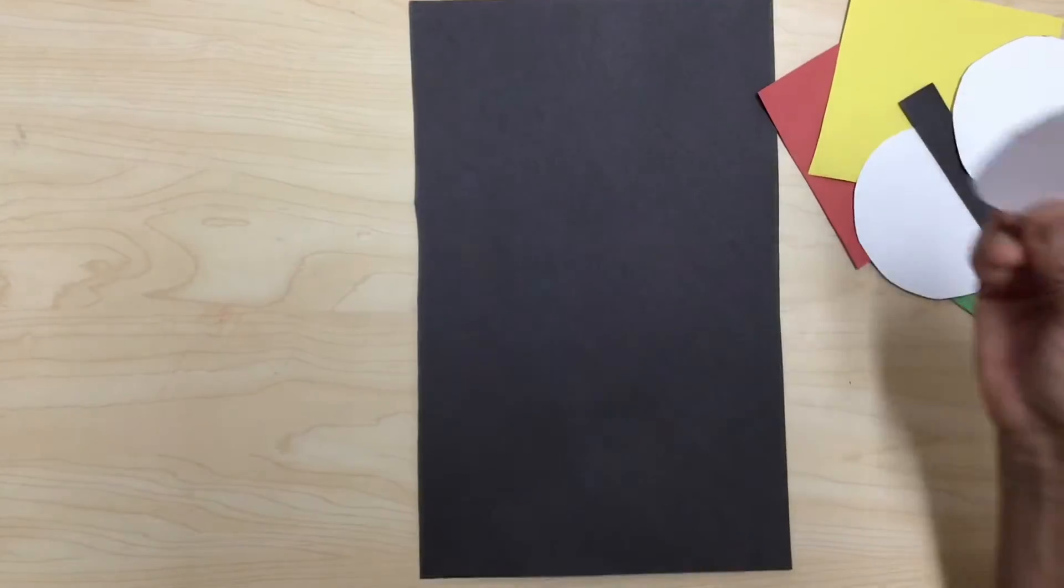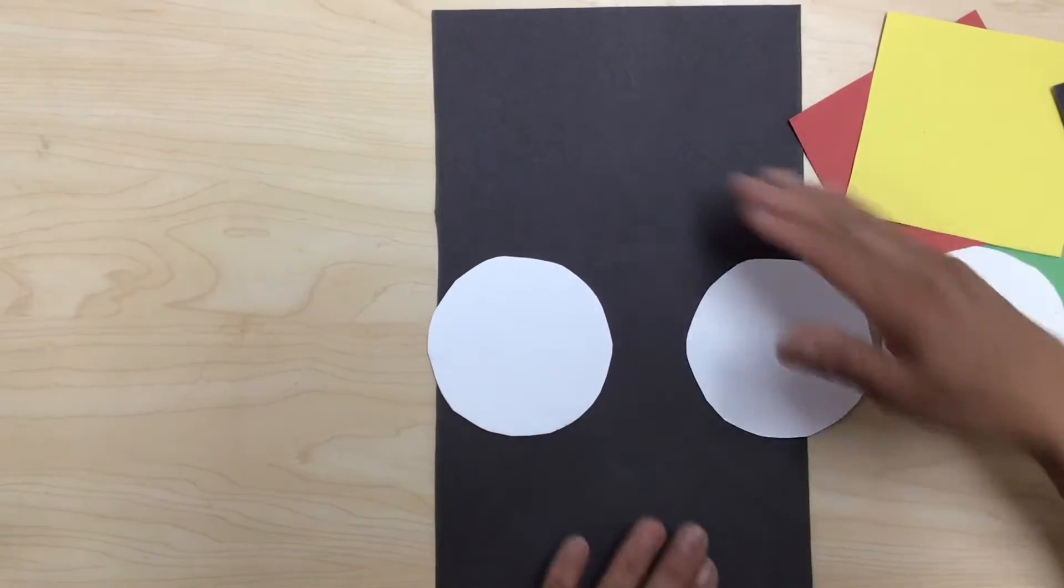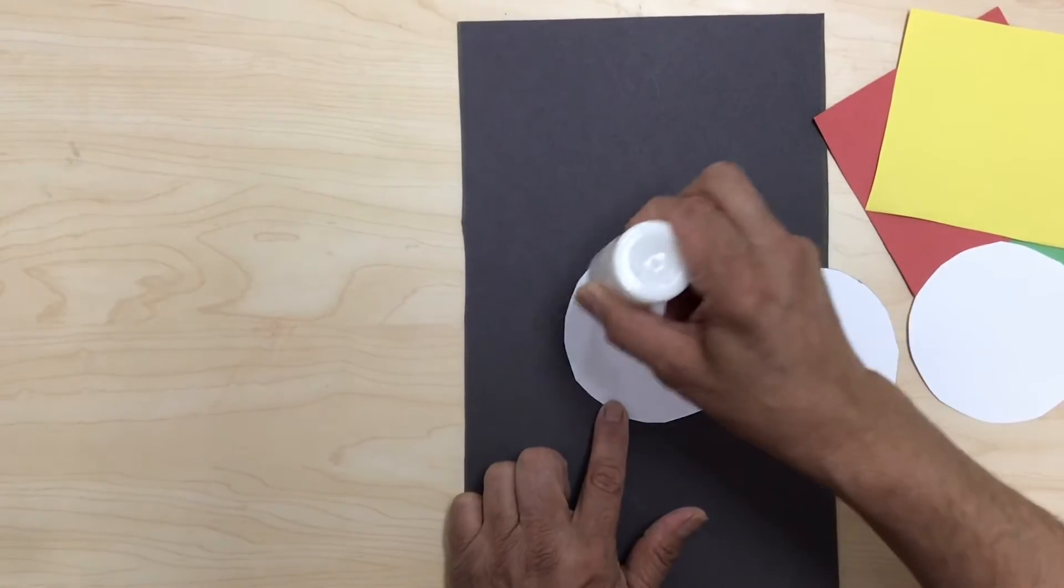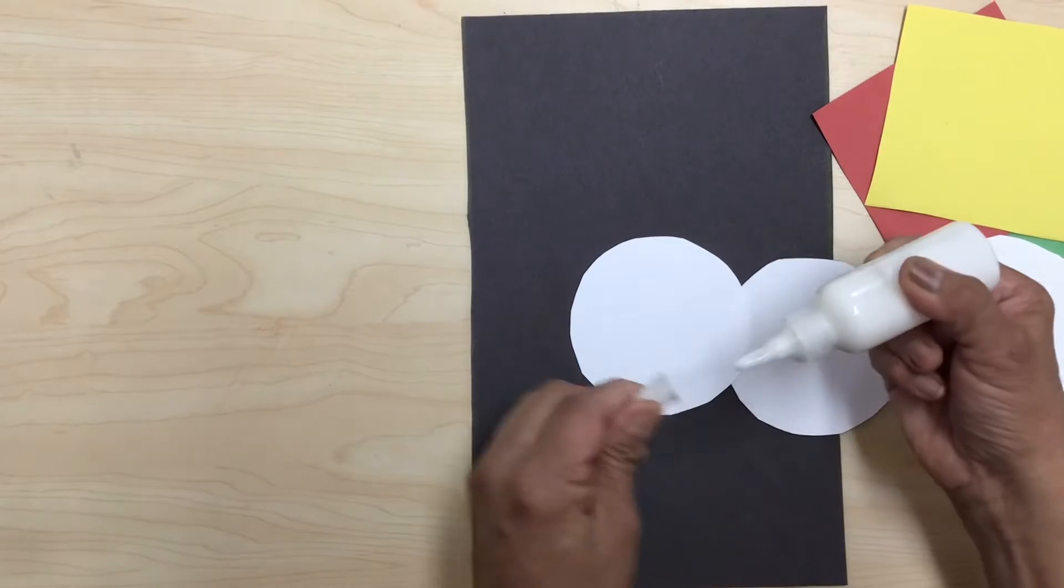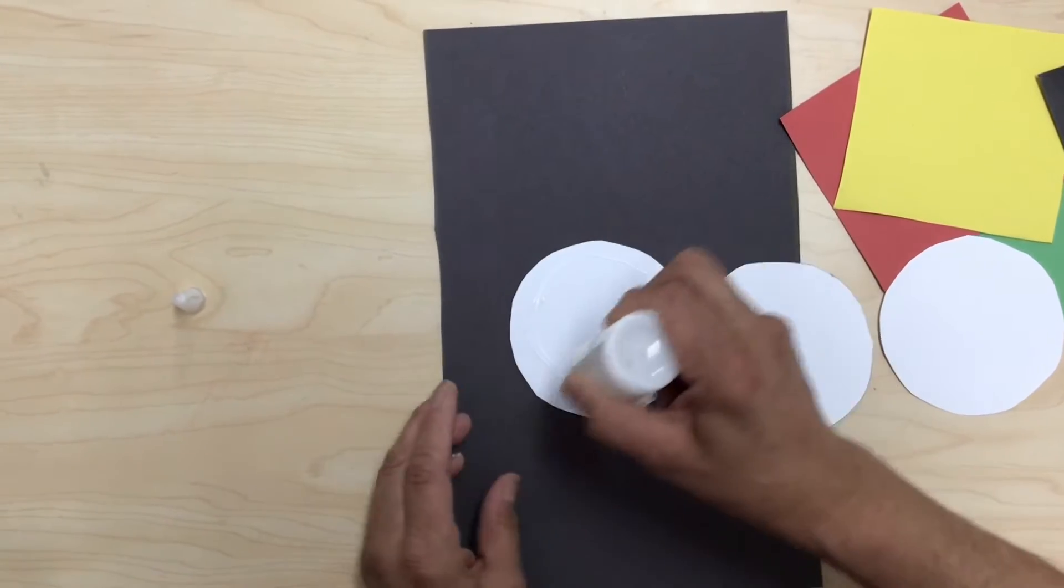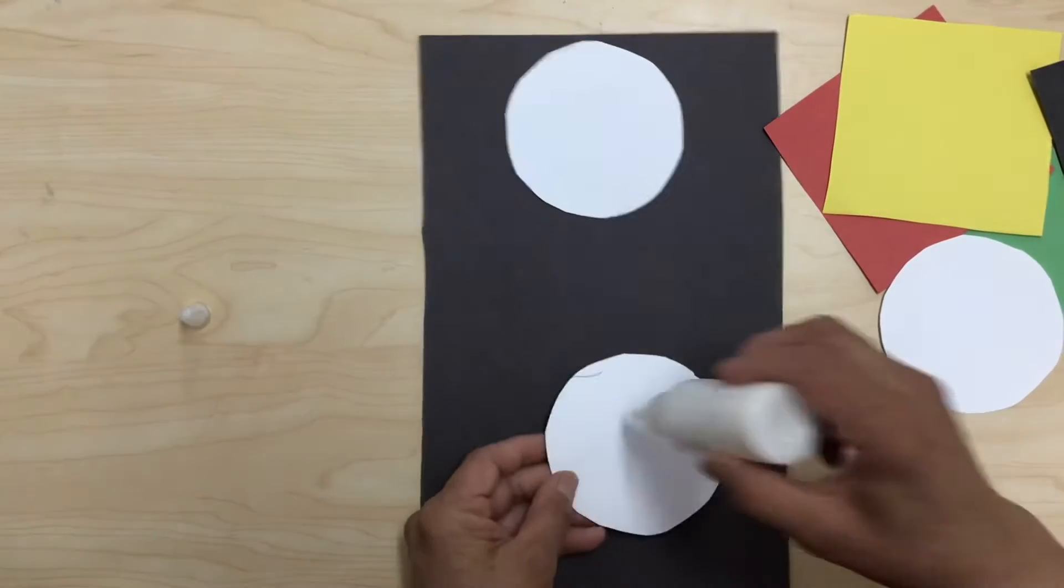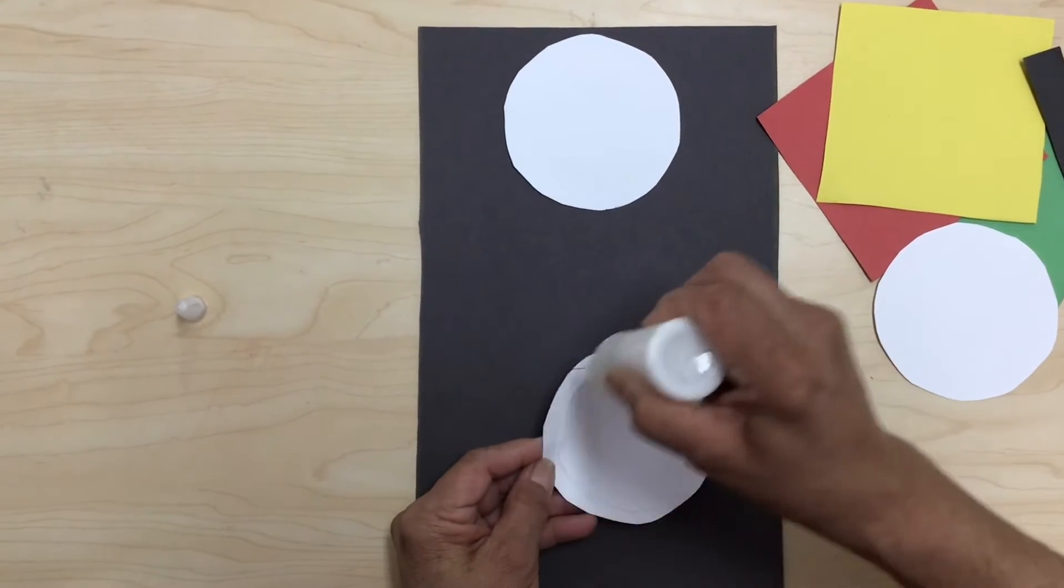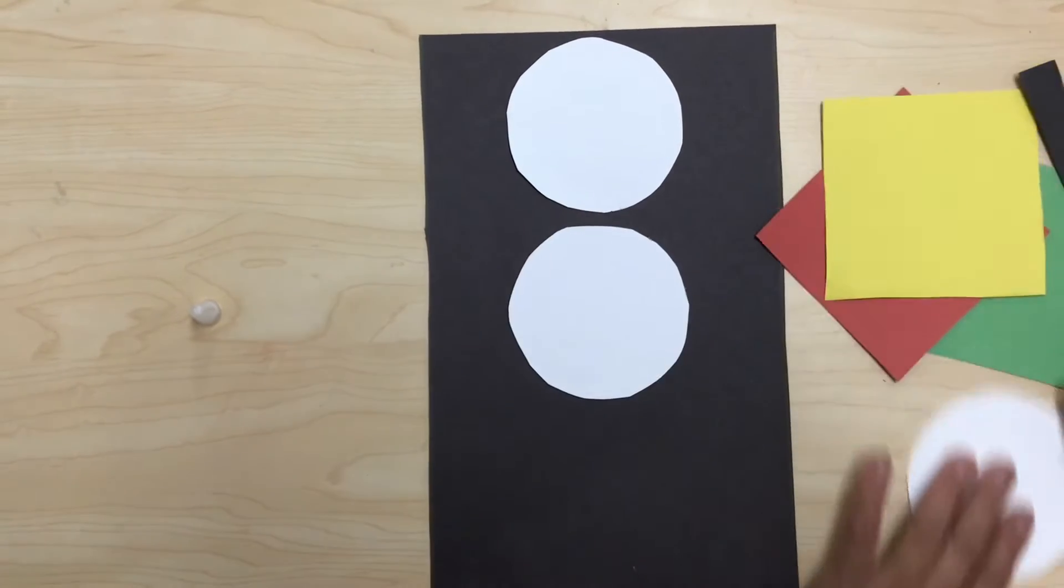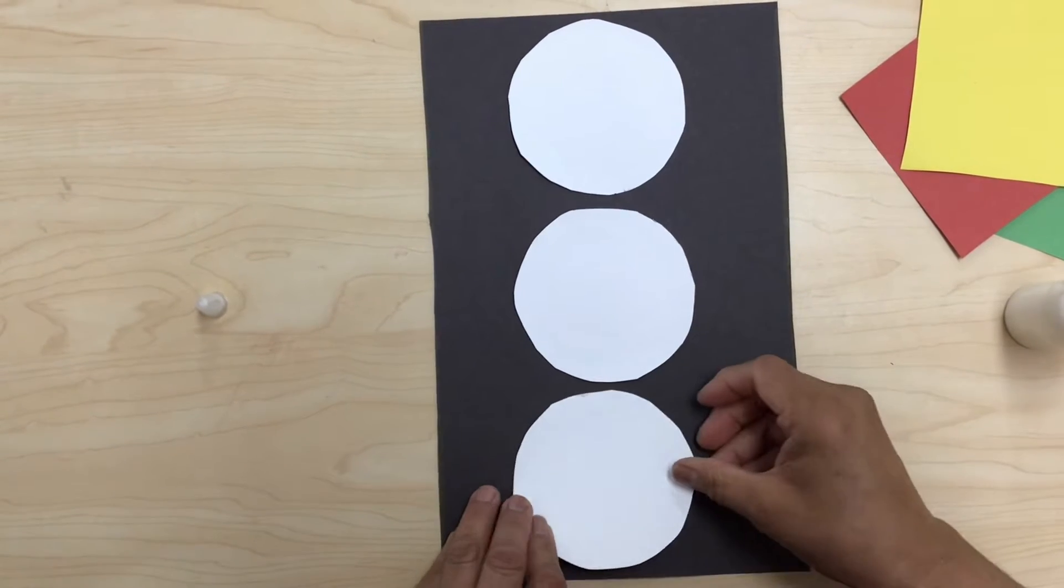Second, I'm gonna get my three white circles. Let's get my glue bottle and put a little bit of glue, because if you squirt hard a lot of glue is going to come out. So you don't need a lot of glue for your circles. One, then two, and there's my third circle—that means three.